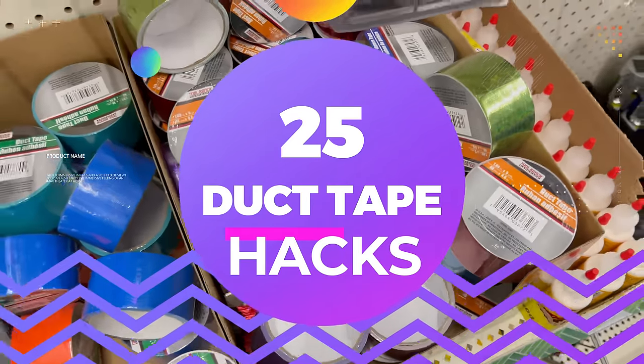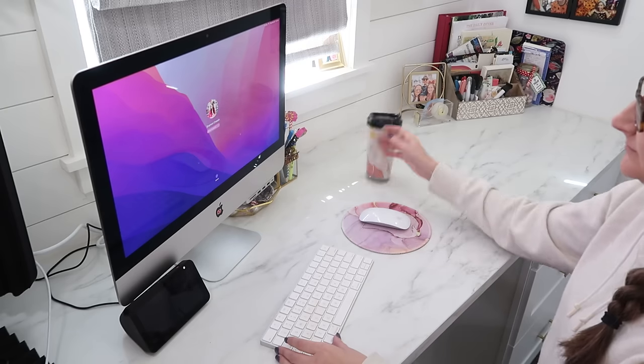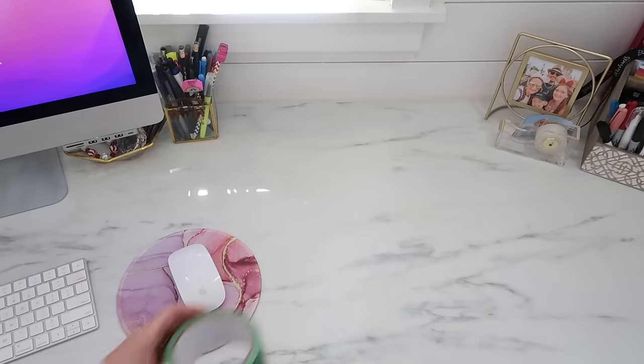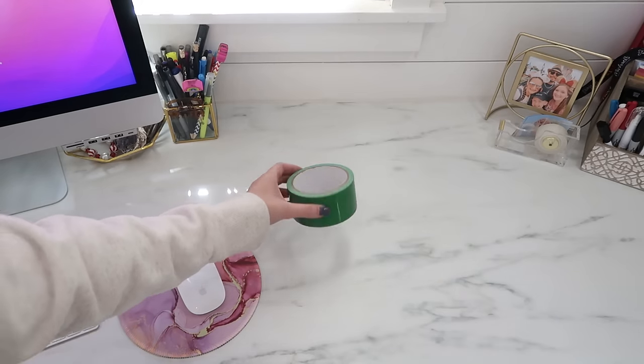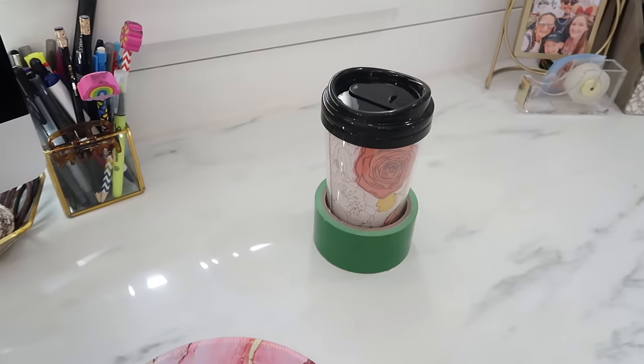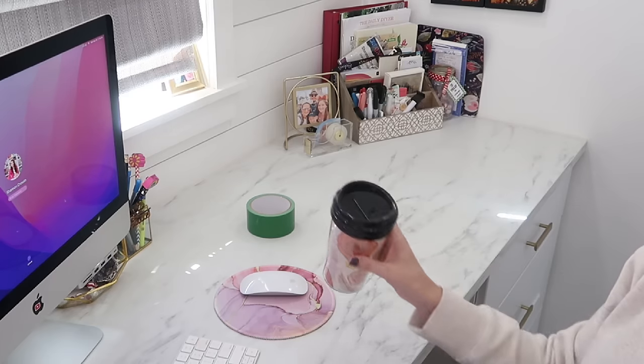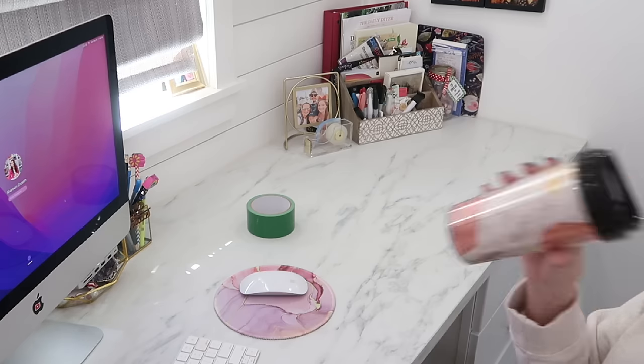Keep your work surfaces safe from accidental spills with the help of a roll of duct tape. Simply sit the roll on your desk as a cup holder. It will help keep your drinks upright and from scooting around. No more big spills and keeps your work surface safe and clean.